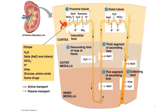We will continue our exploration of the nephron with the discussion of filtrate processing. We will then focus on how tubules, capillaries, and surrounding tissue function together. The porous capillaries and specialized tissue of the Bowman's capsule are permeable to water and small solutes.